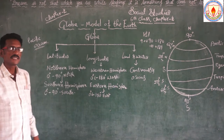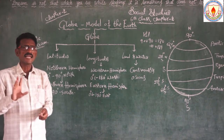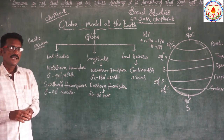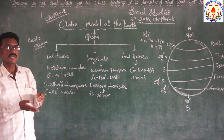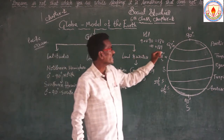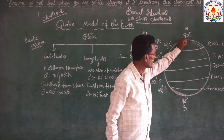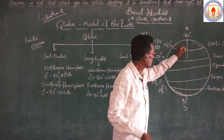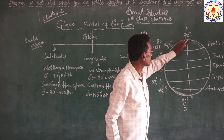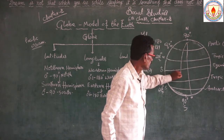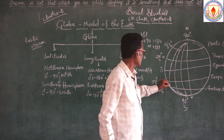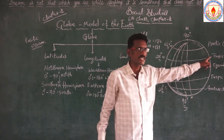Longitudes are also imaginary lines. We know Western Hemisphere and Eastern Hemisphere. These are vertically drawn lines on the globe — vertical means straight lines from top to bottom. This is zero degrees longitude. There are so many longitudes. This is the west part of the globe and this is the east part of the globe.